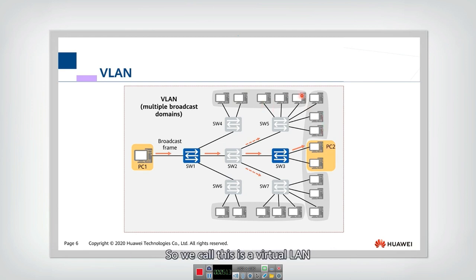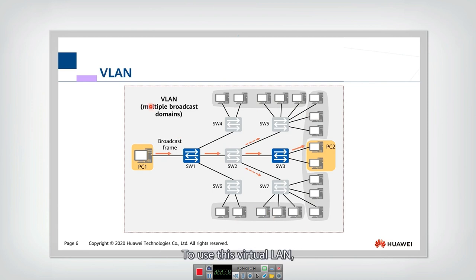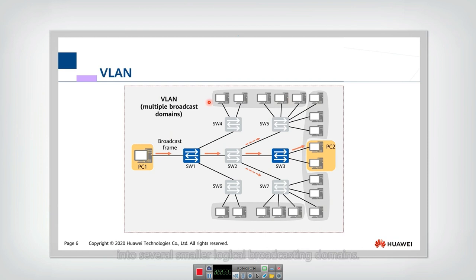We call these virtual LAN 1, virtual LAN 2, virtual LAN 3, and virtual LAN 4. By using Virtual LAN, we can separate the whole large broadcasting domain into several smaller logical broadcasting domains.